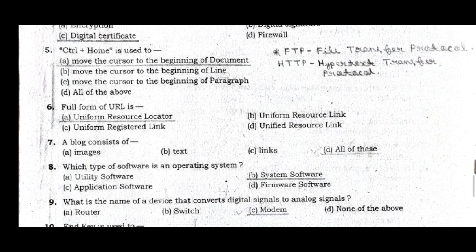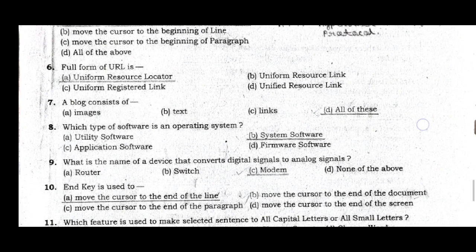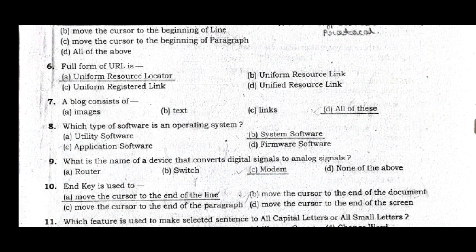Question 7: A block consists of — images, text, links, all of these. Option D is the correct answer. Question 8: Which type of software is an operating system? Answer: system software.